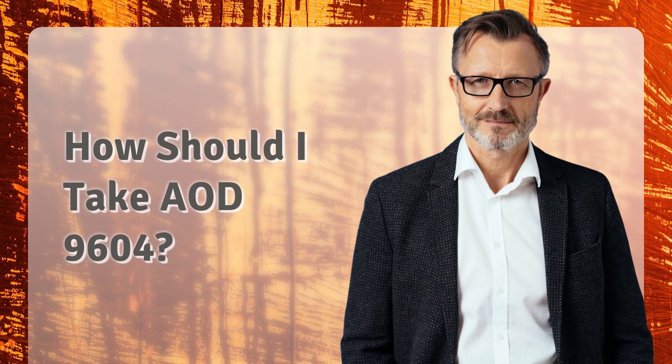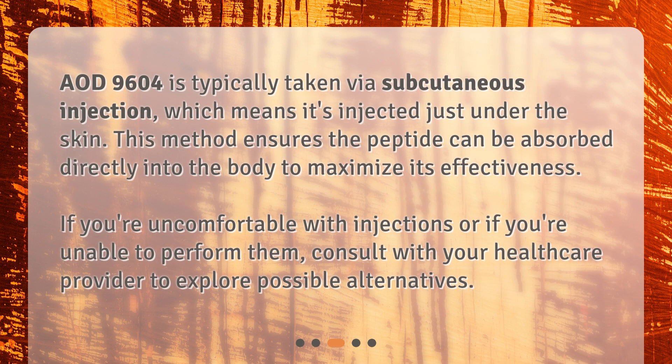How should I take AOD 9604? AOD 9604 is typically taken via subcutaneous injection, which means it's injected just under the skin. This method ensures the peptide can be absorbed directly into the body to maximize its effectiveness. If you're uncomfortable with injections or unable to perform them, consult with your healthcare provider to explore possible alternatives.